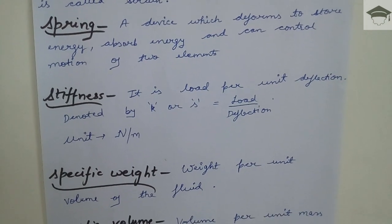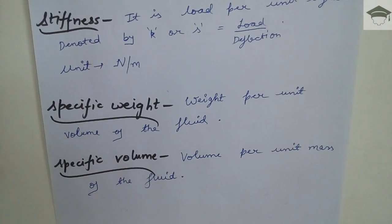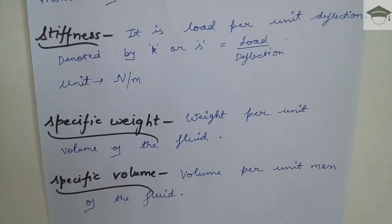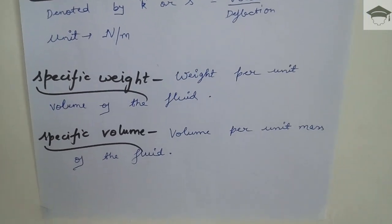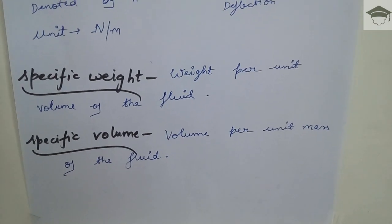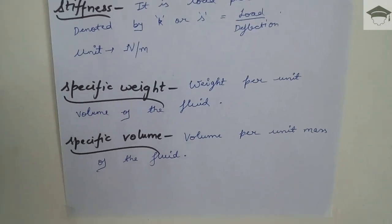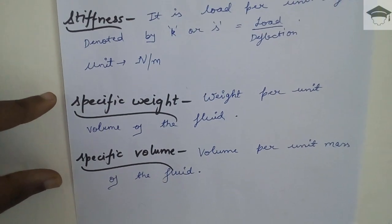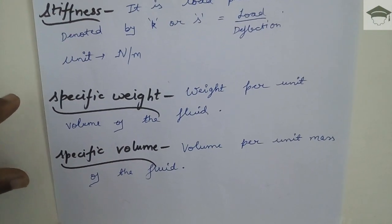Specific weight: weight per unit volume of the fluid; its unit is Newton per meter cube. Specific volume: volume per unit mass of the fluid; its unit is meter cube per kg. These two terms — specific weight and specific volume — are basically used for fluids, that is, for liquids and gases, not for solids.